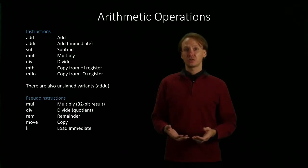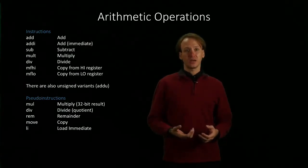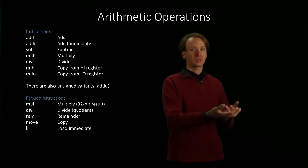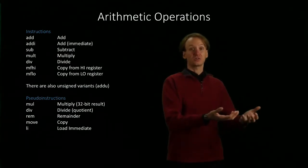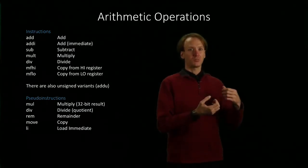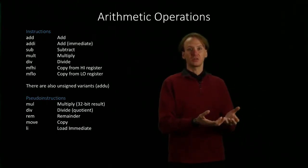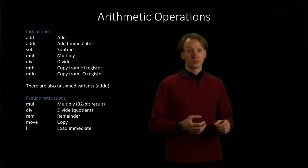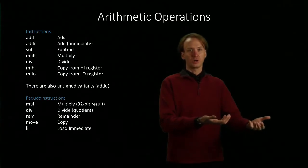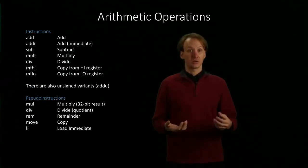The add immediate instruction is slightly different in that it only takes one source from a register. The other source is given as a constant that's actually in the instruction itself. This is useful when you have a number that you know and you want to add that to a number that's in a register. The most obvious example is incrementing a counter. Take our counter, we add one to it, and we store it back into that counter again.